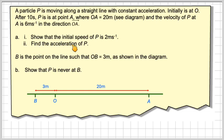Part A: Show that the initial speed of P is 2 metres per second and find the acceleration of P. B is the point on the line such that OB is 3 metres, as shown in the diagram. Part B: Show that P is never at B.